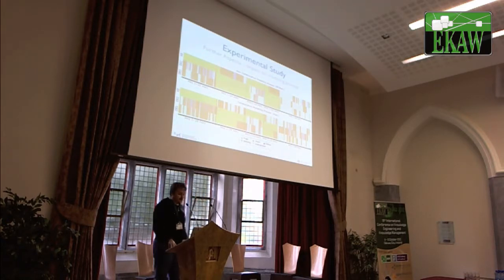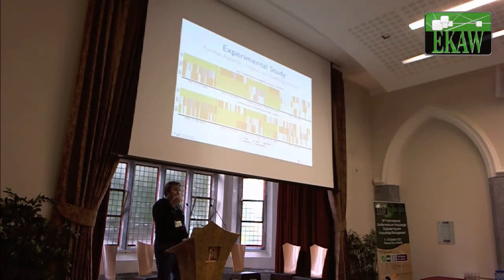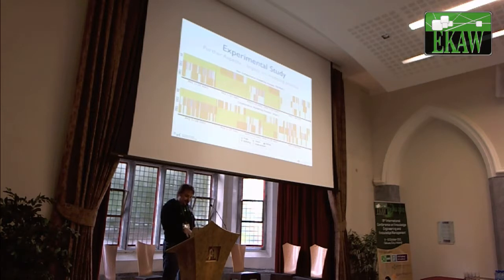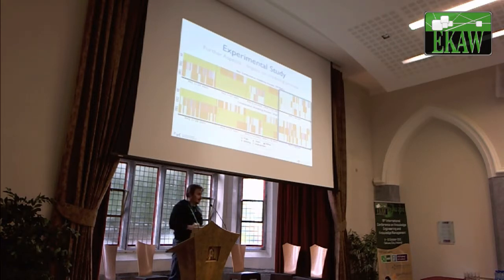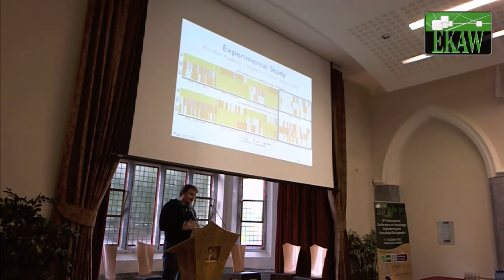Concerning the impact on the modeling process, this slide shows the operations performed by the three users in the two labs — the one using the collaborative version and the other. As you can see, the collaborative version shows a higher dynamism in the activities performed. There are a lot of switches of operations, especially in the last part where users were allowed to work synchronously in the modeling activities, thus suggesting that the collaborative features encourage a more agile interaction between users.